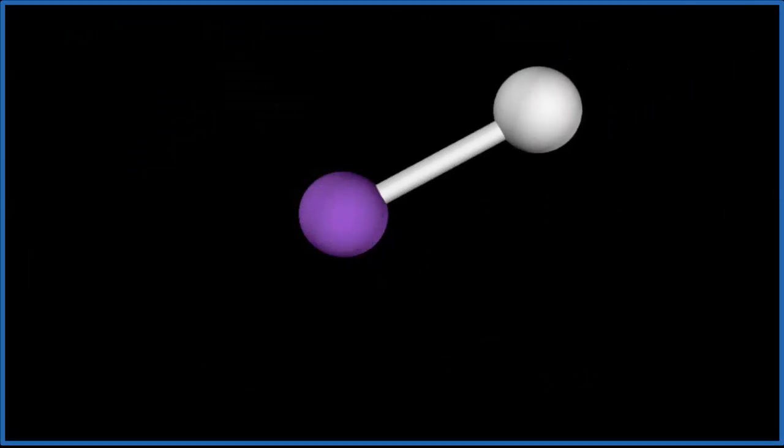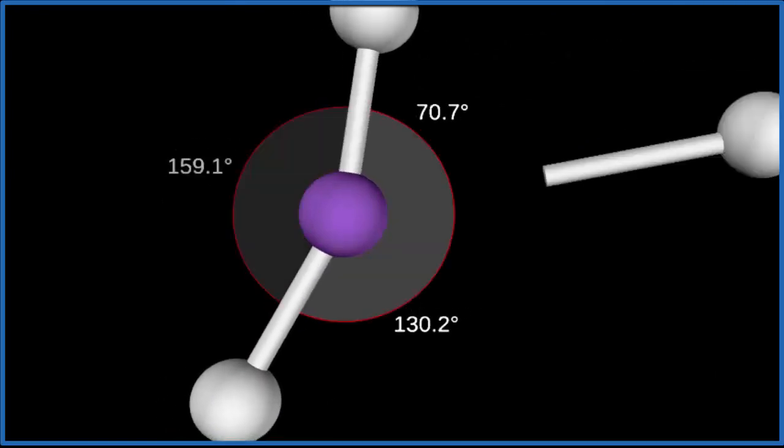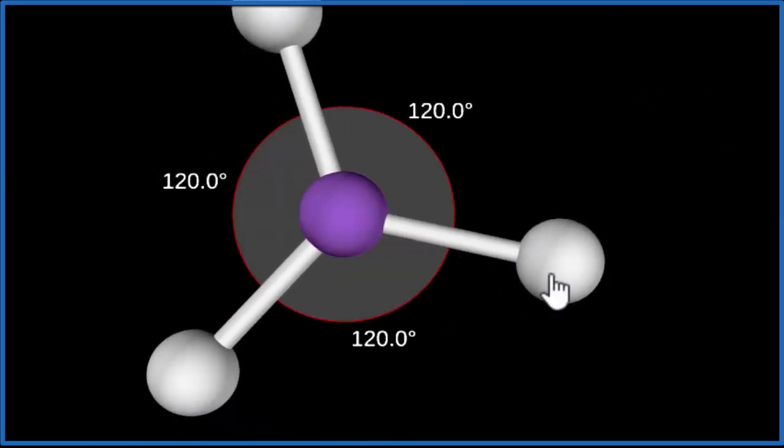So our central nitrogen, that's right here, the nitrogen in purple. We're going to add three chlorine atoms, one, two, they spread out, three. And right now, everything's in a plane.